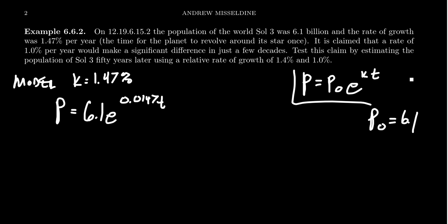And then I'm going to do it in green, the second growth model. If our growth rate is just 1%, 1.0% here, then the model would look like P equals 6.1. The initial population is the same. We're just changing the rate. So we get E to the 0.01T.